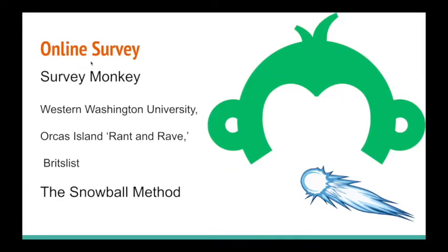Our online survey would be created with SurveyMonkey, because SurveyMonkey can separate data based off of the answers received — so you can have open-ended answers and filter by keyword, like the word 'Washington.' The survey would first be emailed to students and teachers at Western Washington University, but would also be shared online on different Facebook groups that the researchers are members of, such as Orcas Island Rant and Rave and the Brits List. Within the survey, we would ask people to try sending it to five other members of their community using the snowball method.